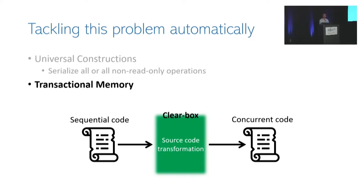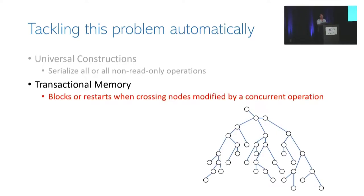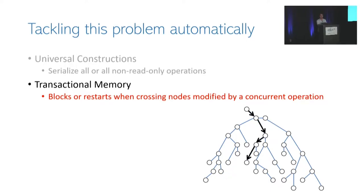Another method is transactional memory. We take sequential code in a clear-box manner and inject instrumentation to output concurrent code, by injecting calls to transactional memory functions wherever the original code reads from or writes to memory. Unlike universal constructions, transactional memory uses an optimistic-like protocol that doesn't serialize all write operations. However, transactional memory systems don't fulfill their potential because they block or restart whenever they cross a node modified by some other concurrent operation.